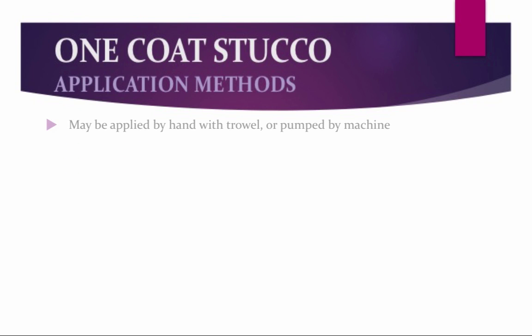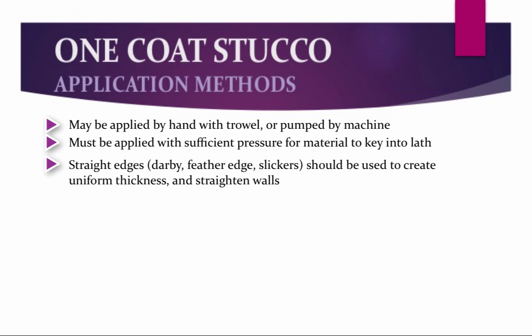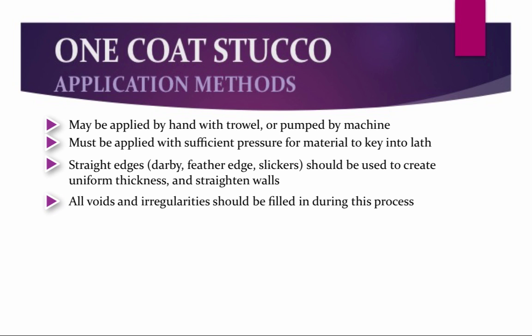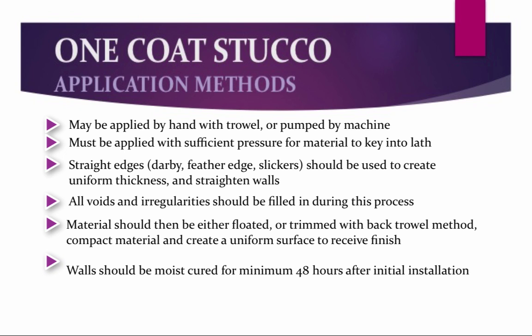One-coat stucco may be applied by hand with a trowel or pumped by a machine. Stucco must be applied with sufficient pressure for the material to key into the lath while in its plastic state. Straight edges such as derbies, feather edges, and slickers should be used to create uniform thickness and straighten walls. All voids and irregularities should be filled in during this process. Material should then be floated or trimmed using the back-trowel method to compact the material and create a uniform surface to receive finish.